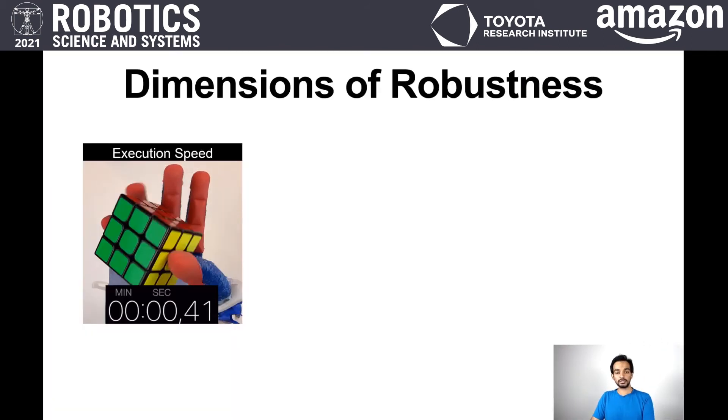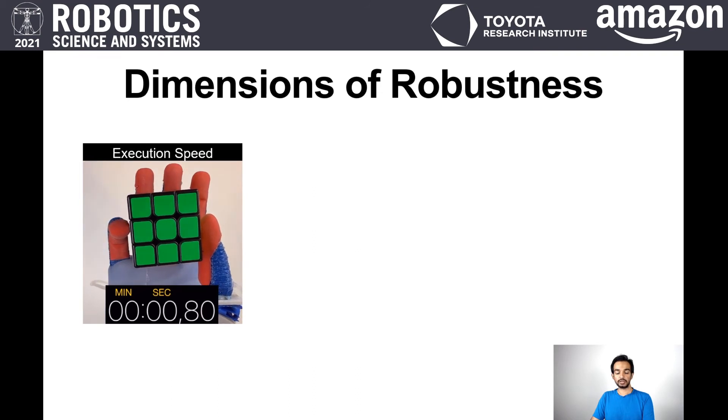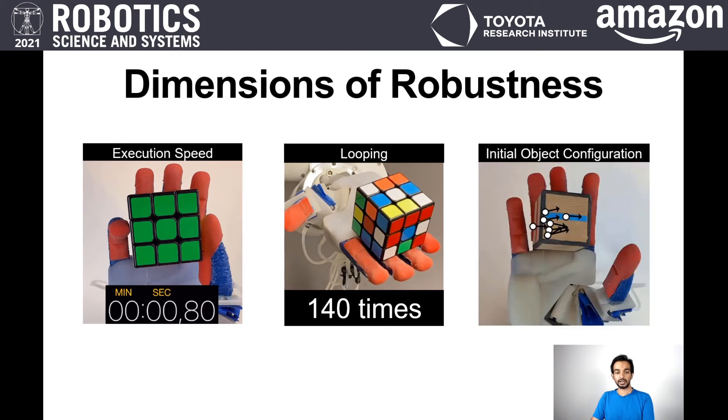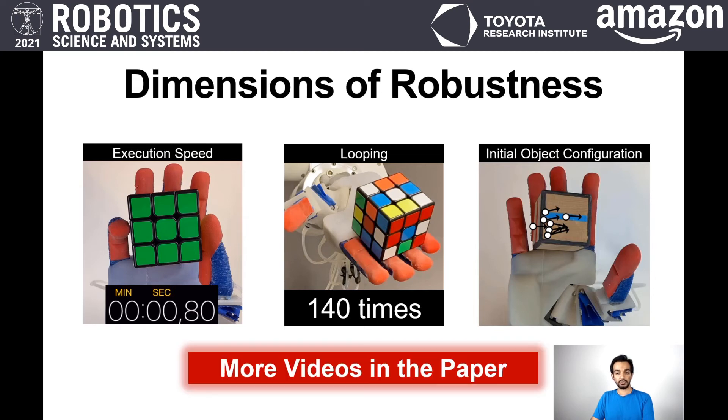Our manipulation skills can handle variations in execution speed up to a factor of 80. They can be looped up to 140 times and can handle variations in initial object placement. All of this is thanks to the co-design of hardware and control. More videos can be found in the paper.